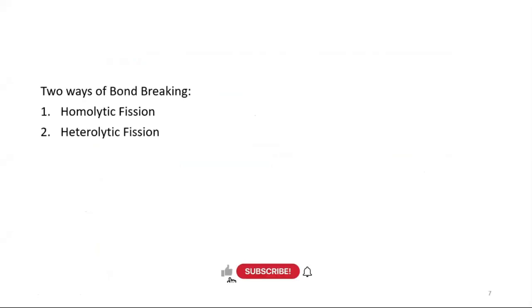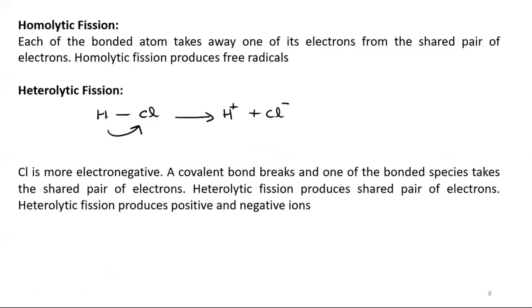There are two ways of bond breaking: homolytic fission and heterolytic fission. These are things you should know by heart — required memorization, so please memorize them. Homolytic fission is when each of the bonded atoms takes away one of its electrons from the shared pair of electrons, and homolytic fission produces free radicals.